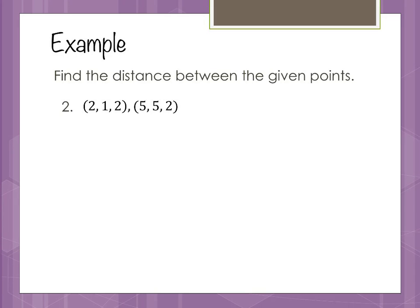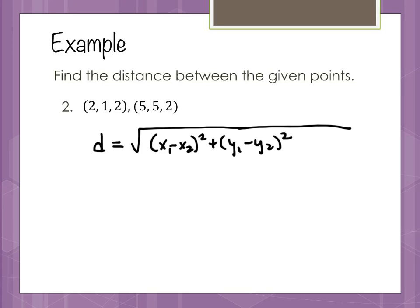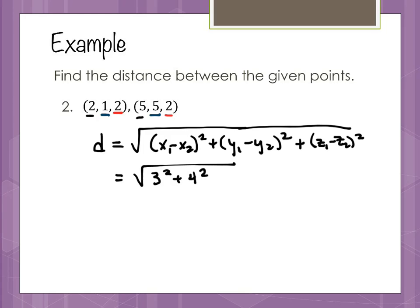The distance formula in two dimensions is the square root of (x1 minus x2) squared plus (y1 minus y2) squared. Since we have a third dimension, we simply add (z1 minus z2) squared. Looking at the example: the difference in X values is 3, so that's 3 squared; the difference in Y values is 4, so 4 squared; and the difference in Z values is 0. We get the square root of 25, which is 5.